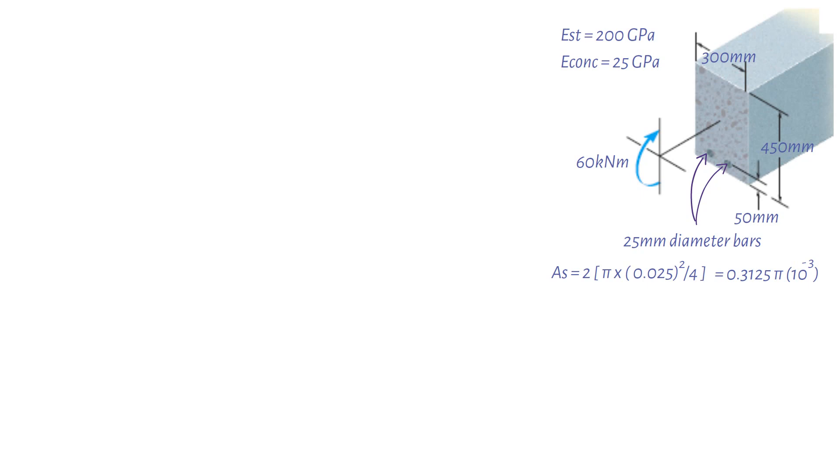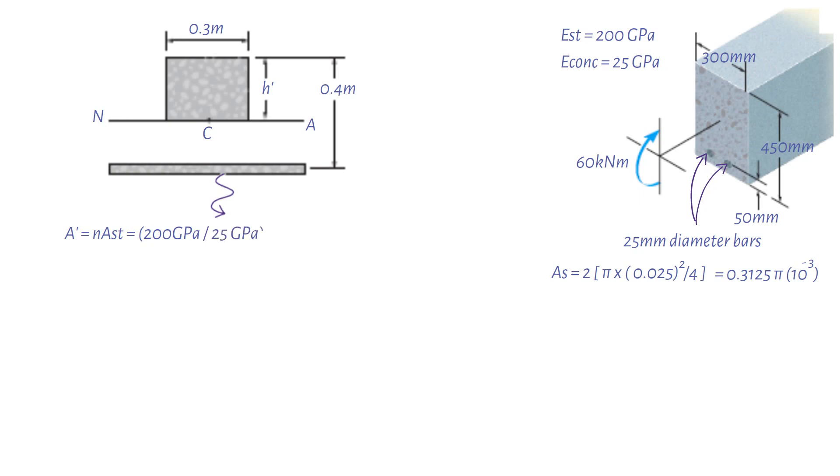This area will be transformed into an equivalent area of concrete. As we mentioned earlier, equivalent area of concrete would be Young's modulus of steel 200 GPa divided by modulus of elasticity of concrete 25 GPa times the total area of steel 0.3125 pi times 10 to the power of minus 3 meters squared. This results in a value of 2.5 pi times 10 to the power of minus 3 meters squared.